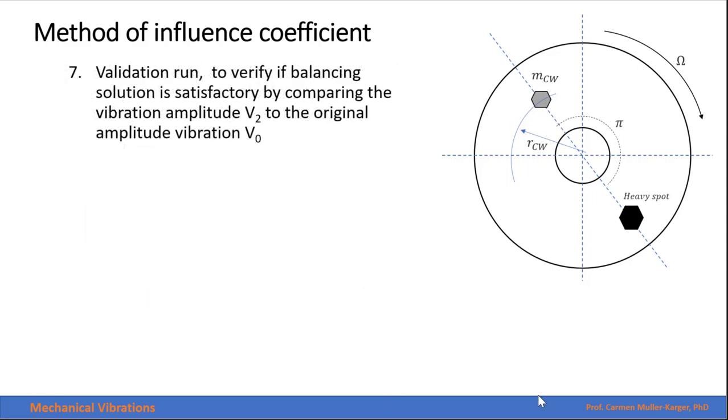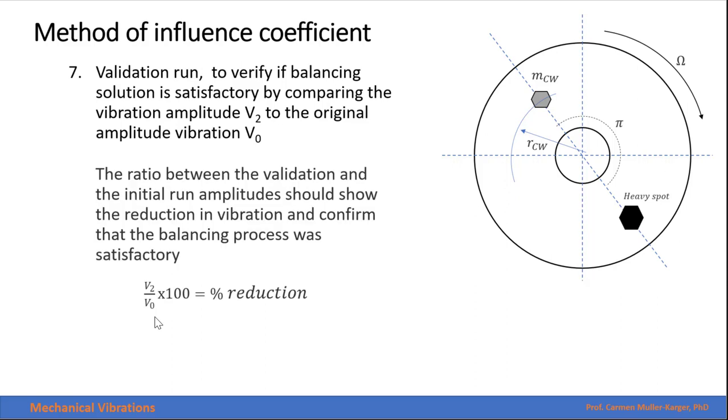The last step of our process is to do a validation run. To verify if the balancing solution is satisfactory, we will do that by comparing the vibration amplitude that we get in this validation run with the original amplitude. The ratio between the validation and the initial run amplitude should show the reduction in vibration and should confirm that the balancing process was satisfactory.